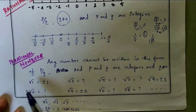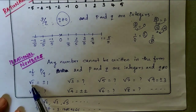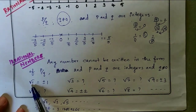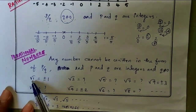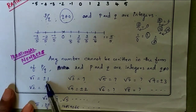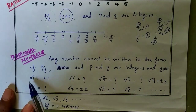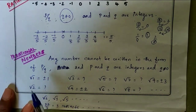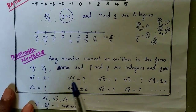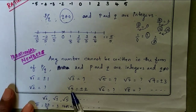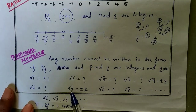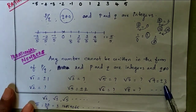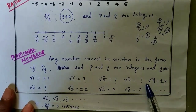Now, root one is one, because one times one is one, and minus one times minus one is also one. Root four is two, because two times two is four, and minus two times minus two is also four. And three times three is nine, so root nine is three.